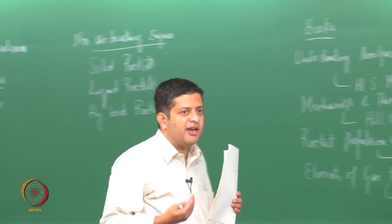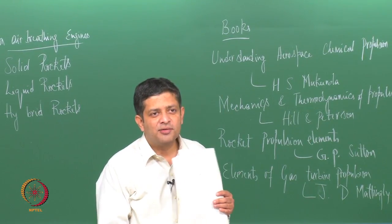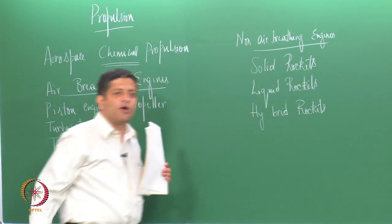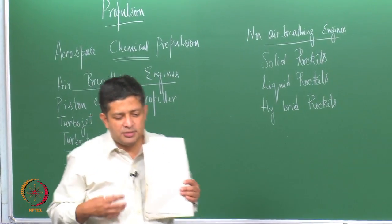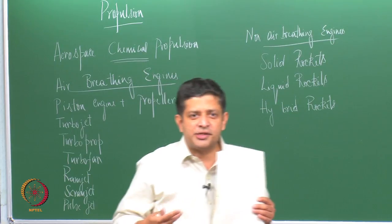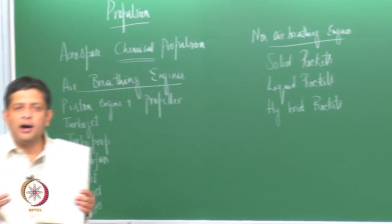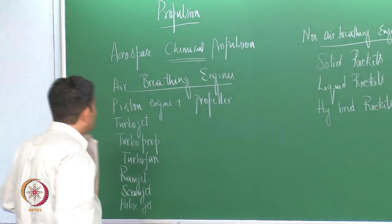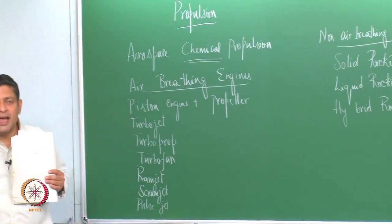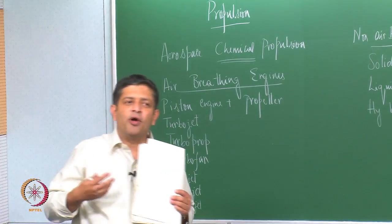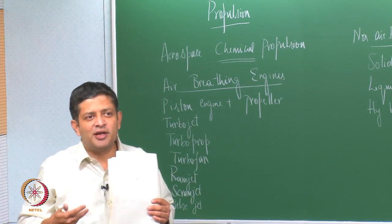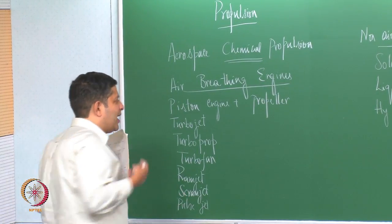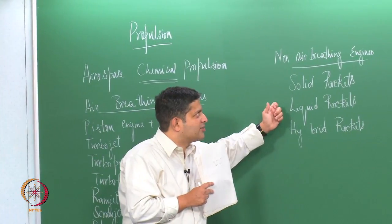Whenever we require a very large thrust for a very short duration, like in rockets or in missiles, we use the non-air breathing engines or the rockets. Whenever we need a large thrust for a very long duration, like in aircrafts that go from one place to another across continents, we use air breathing systems, because in air breathing systems you have the advantage of not needing to carry the oxidizer. It makes sense to make use of the atmospheric oxygen and propel yourself rather than carry the oxidizer also, which is what is done in rocket engines.